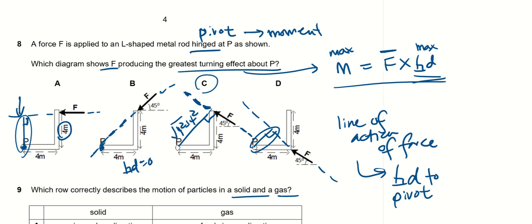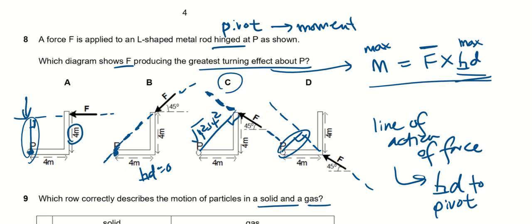Okay, this is the second part of my video because I didn't realize that I stopped the recording before. Let's go to question eight now. A force F is applied to an L-shaped metal rod hinged, that means there's a pivot involved, so that means it's dealing with moments.